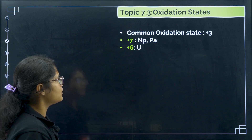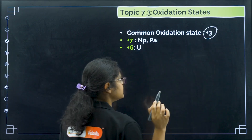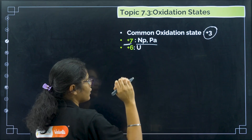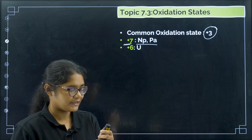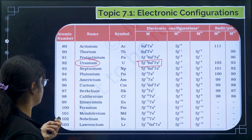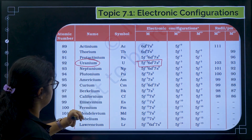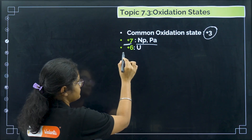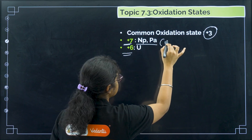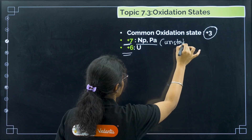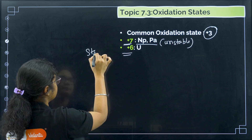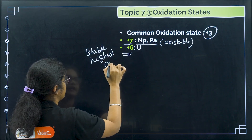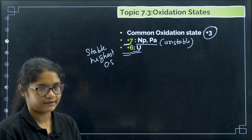The common oxidation state of actinoids is +3. The highest oxidation state is +7, given by neptunium (Np) and protactinium (Pa), but this is unstable. The highest stable oxidation state belongs to uranium, which shows +6. You must remember the electronic configuration of uranium: 5f³ 6d¹ 7s².